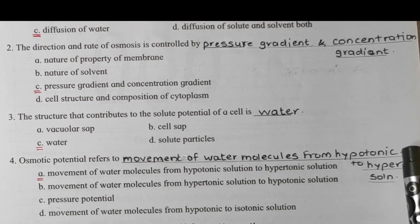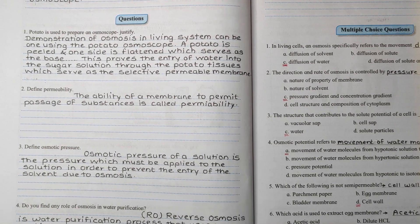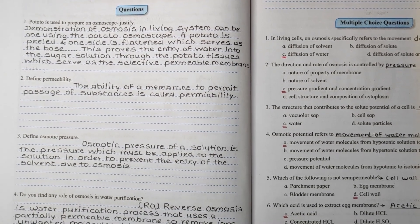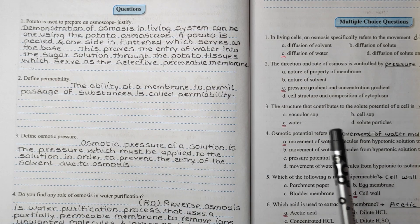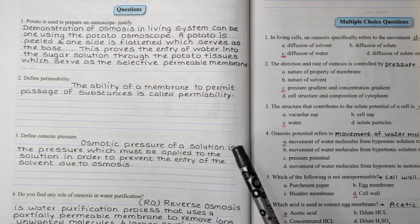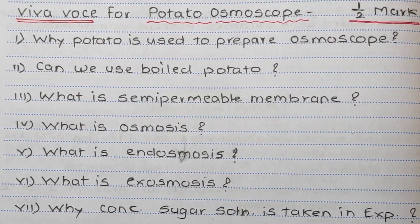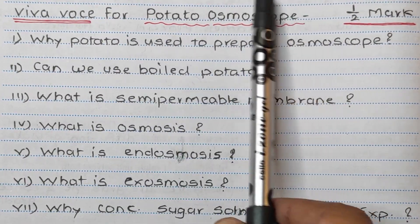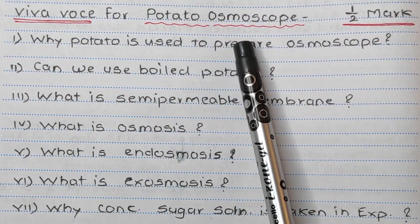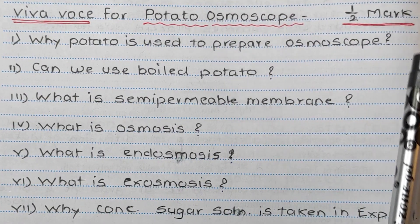All these answers you have to write in your practical book. You have to complete the practical book, for which there are three marks. Along with these question answers, you can watch my video about potato osmosis. Now we'll look at the viva questions which are asked during the exam about the potato osmoscope. Half a mark is allocated for viva questions, and any one or two viva questions will be asked based on this experiment.